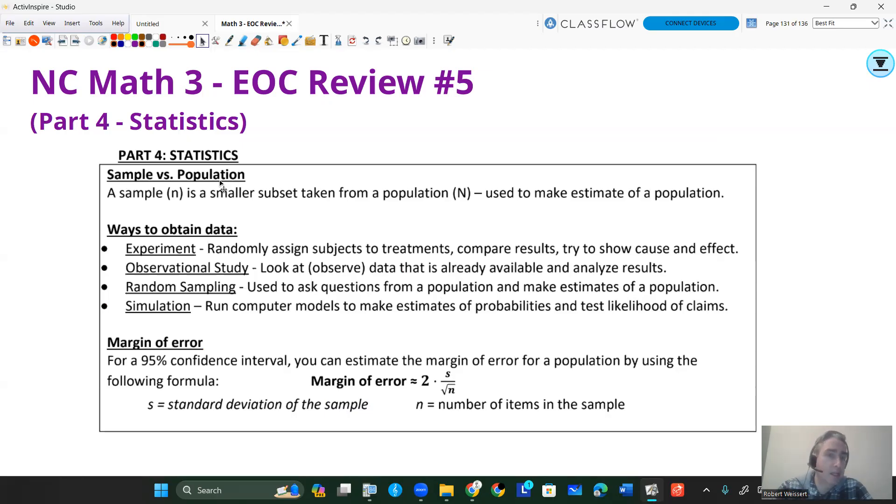There are different ways to obtain data. You can do experiments where you're comparing and doing random assignment to try to show cause and effect. You have to have ethical things to do in experiments. Otherwise, you do something like an observational study where you're just looking at data. You may just decide to do a random sample, like a systematic random sample or a simple random sample, or you might run a simulation using computer models or random number generators to simulate data that you can't easily collect.